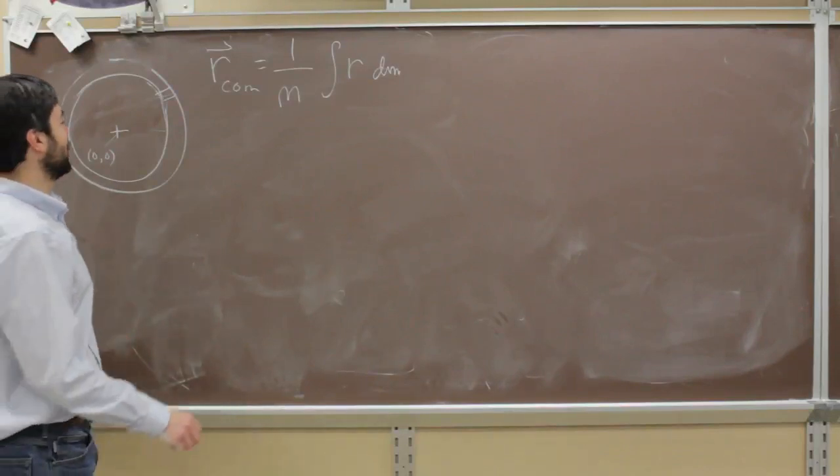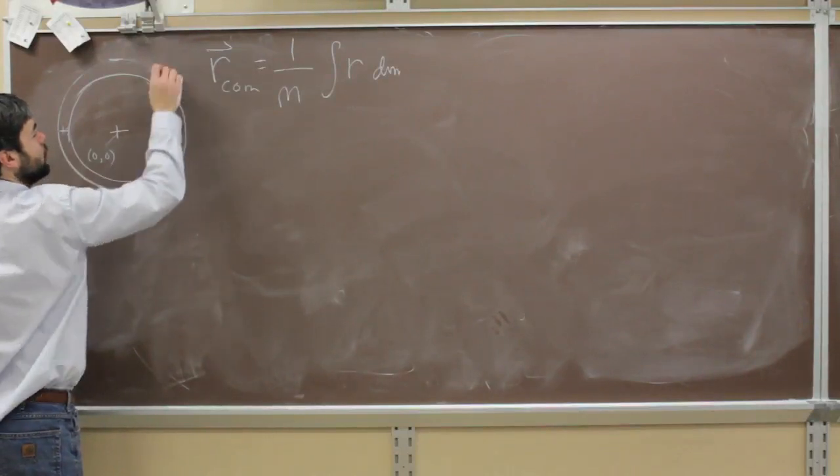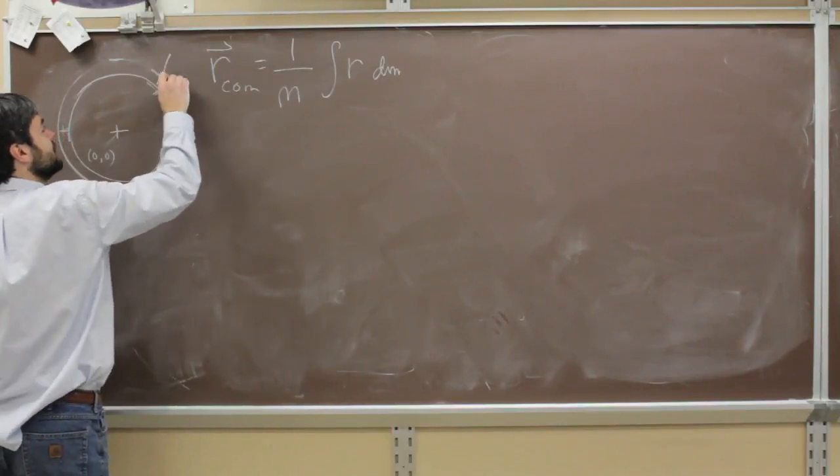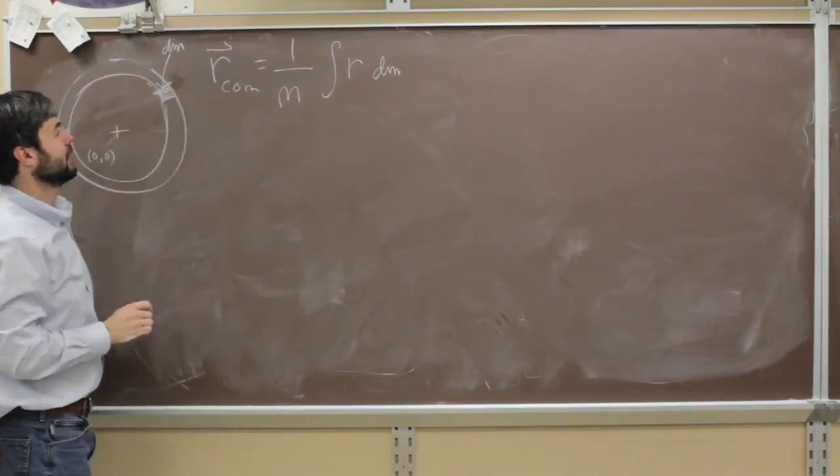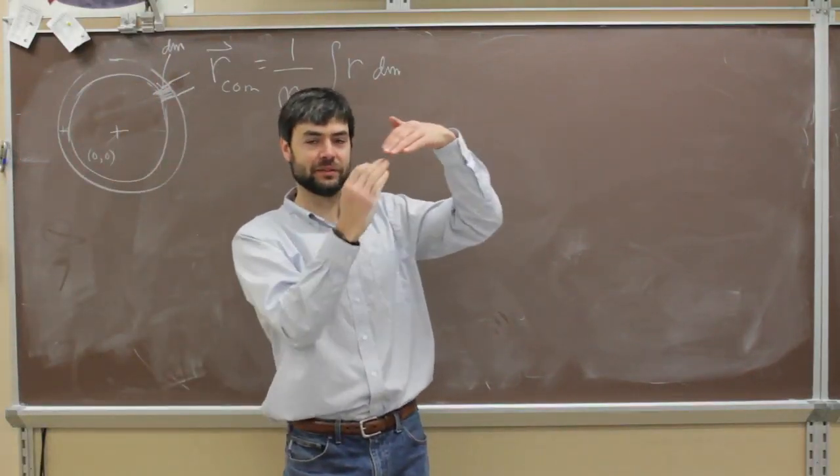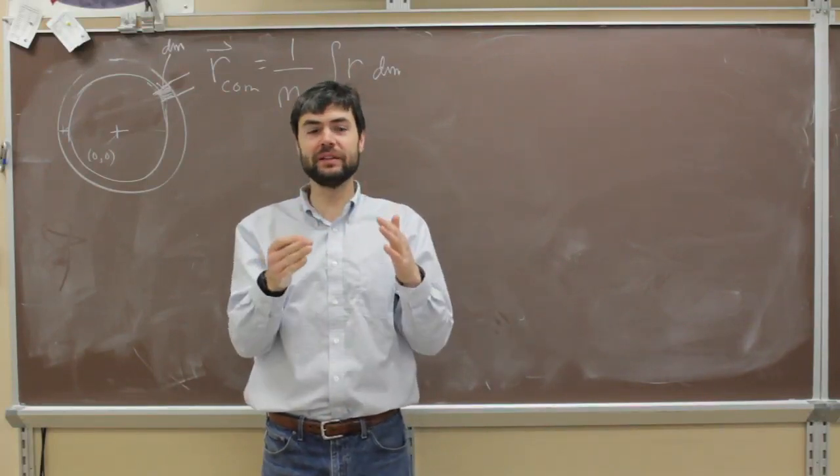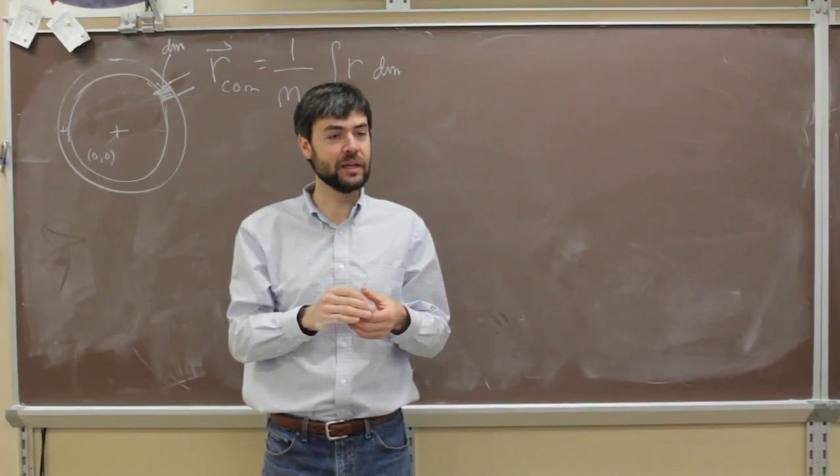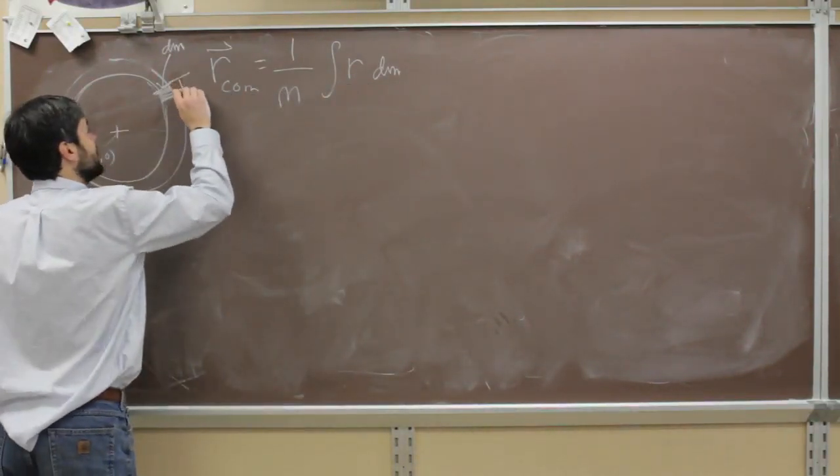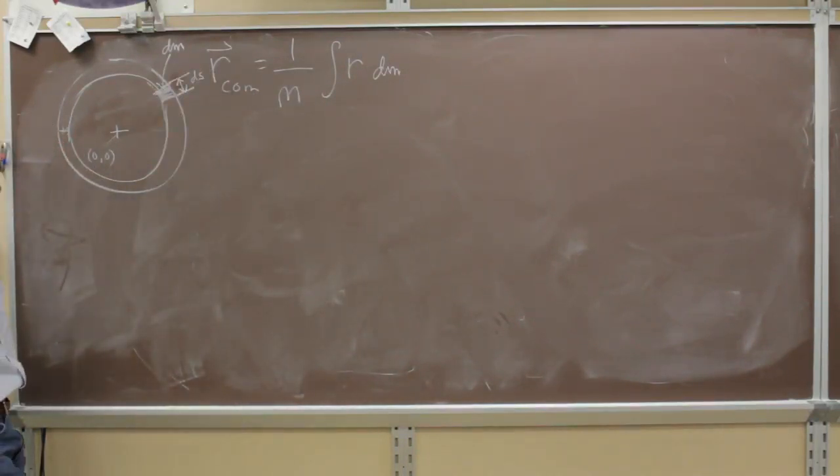Okay, so let's see. We've got this little chunk right here. And what's the mass of that little chunk? Dm. It's dm. It's little m, okay? And what is the length of that section? What's the section of a curve? An arc. An arc, okay? And what's the length of an arc? S. And what's a little tiny bit of an arc? Ds. So that right there is ds.